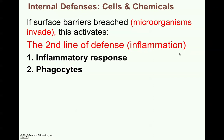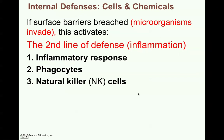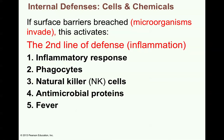Phagocytes are kind of like amoebas — they can stick out little pseudopods, meaning fake feet, and engulf the invader and break it apart and neutralize it. There's also another type of cell called a natural killer cell that has a similar function. And there are antimicrobial proteins that the body produces in response to when an invader gets through those surface barriers.